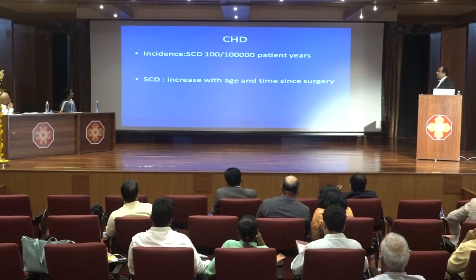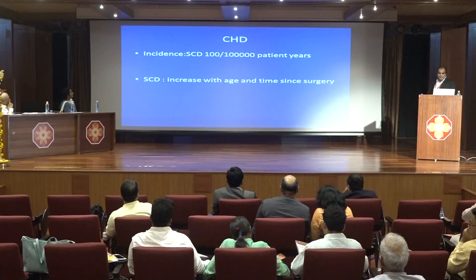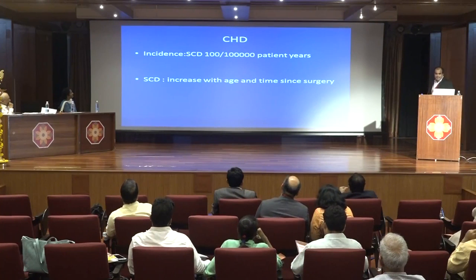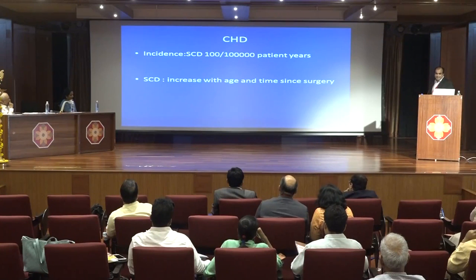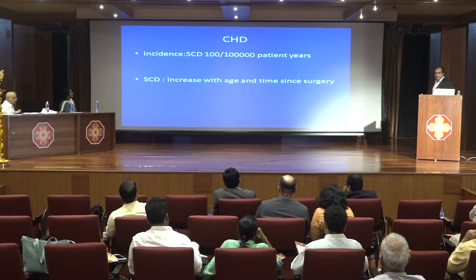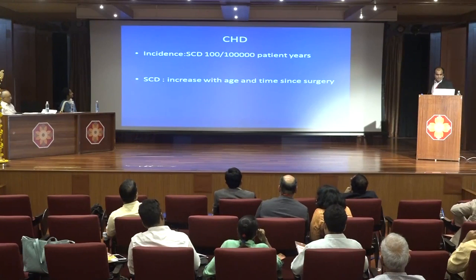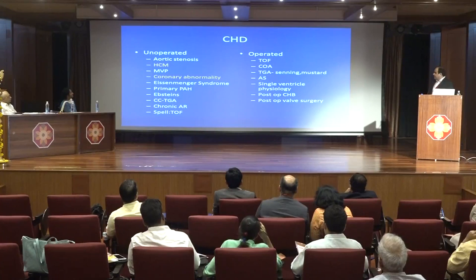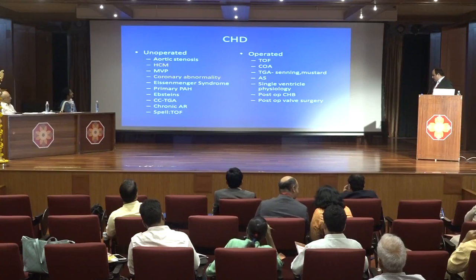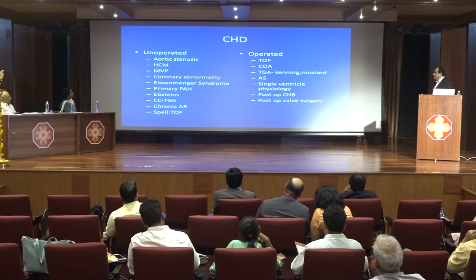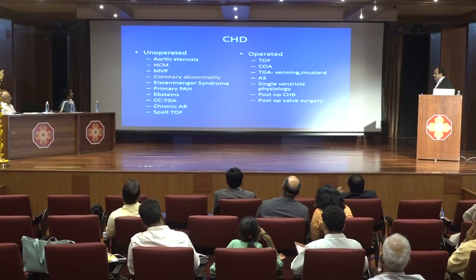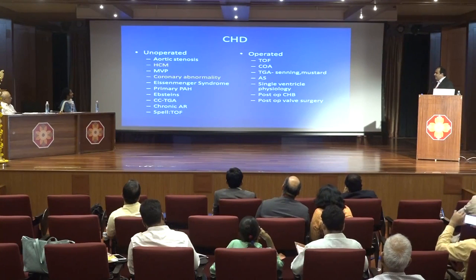Congenital heart disease has an incidence of sudden cardiac death of 100 per lakh patient-years. SCD is usually associated with increasing age of the patient and time since surgery — for example in TOF, the most common time for SCD is 20 years after surgery. In unoperated patients, common causes include hypertrophic cardiomyopathy, aortic stenosis, coronary abnormalities, mitral valve prolapse, Eisenmenger syndrome, primary PAH, and Ebstein's anomaly.